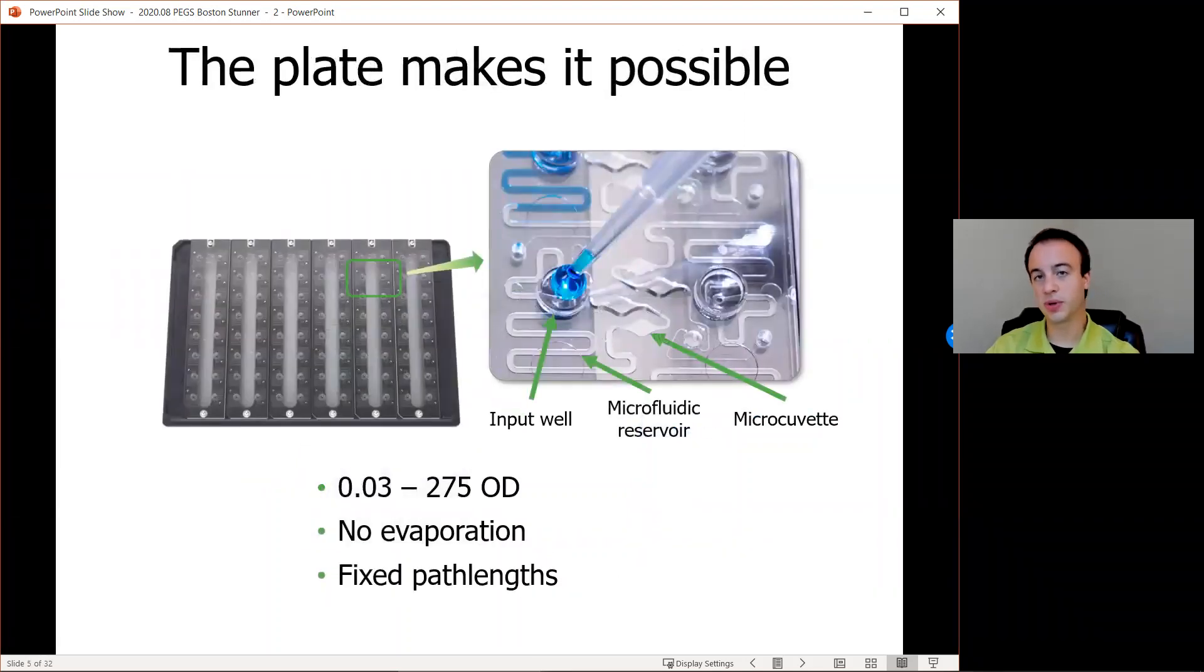Here's a closer look at how this is possible on Stunner. Two microliters is pipetted into the input well and then the microfluidic circuit does the rest. The unique microfluidic circuit molded into Stunner plates ensure that there's no cross-contamination or evaporation and the fixed path lengths mean you know exactly what you're measuring.